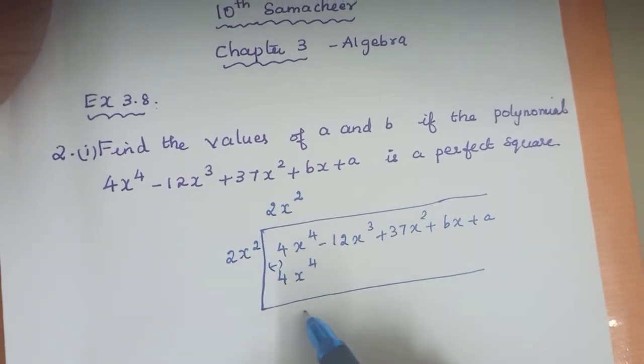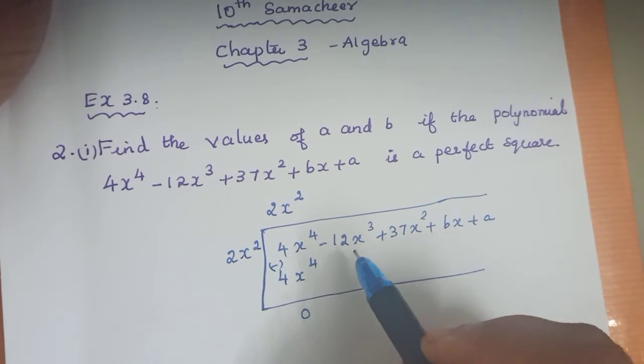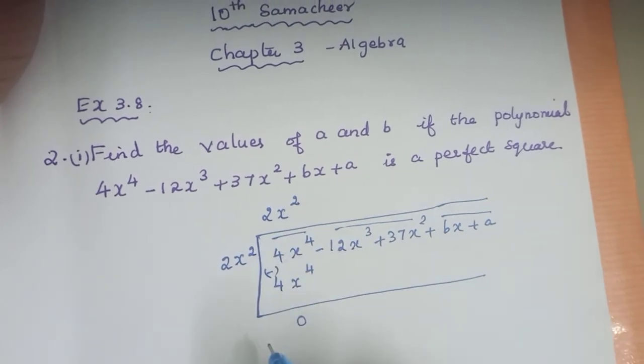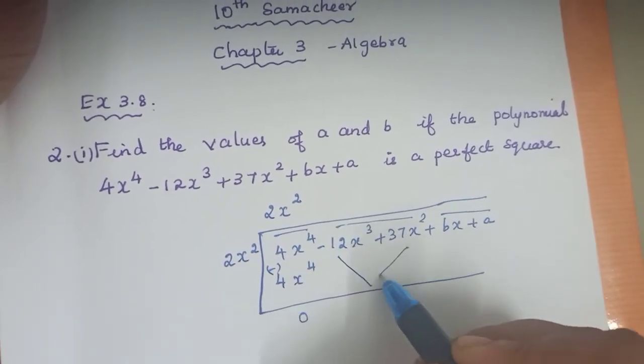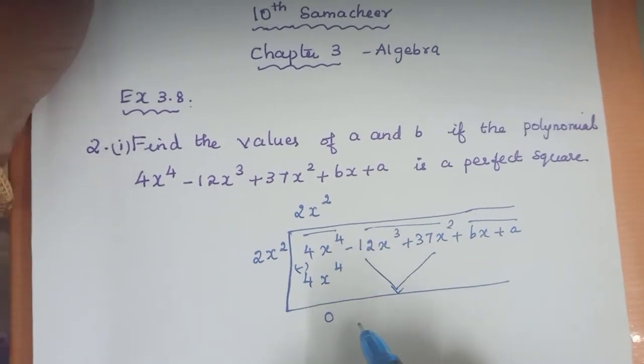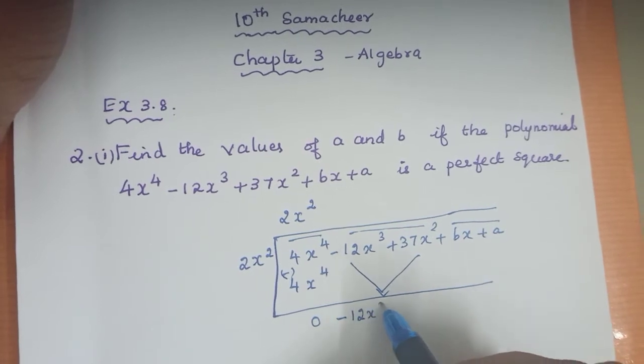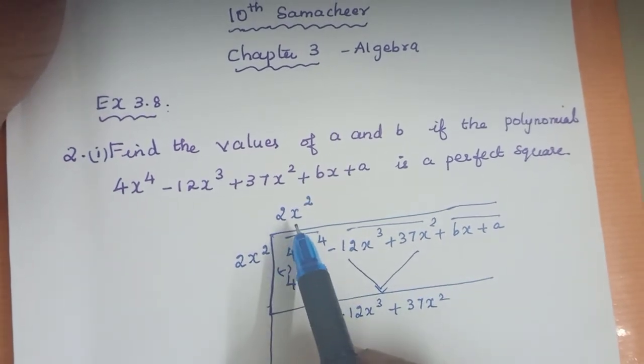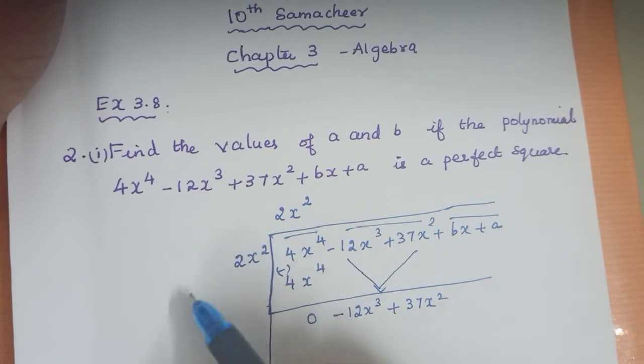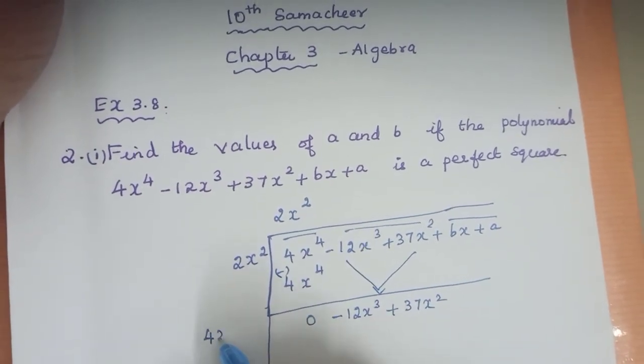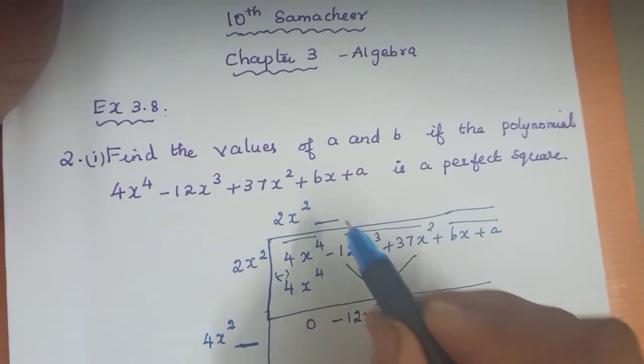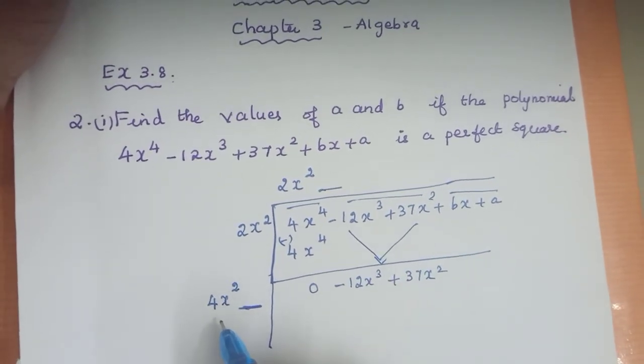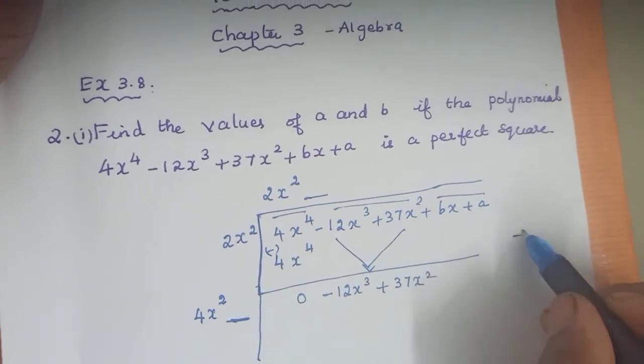4x to the power 4 minus 12x cube plus 37x square plus bx plus a. Now for 4x to the power 4, we need a perfect square. 4 is a square number, 2 square is 4, so we put 2x square. When you multiply 2x square into 2x square, you get 4x to the power 4. Now bring the remaining terms down: minus 12x cube.